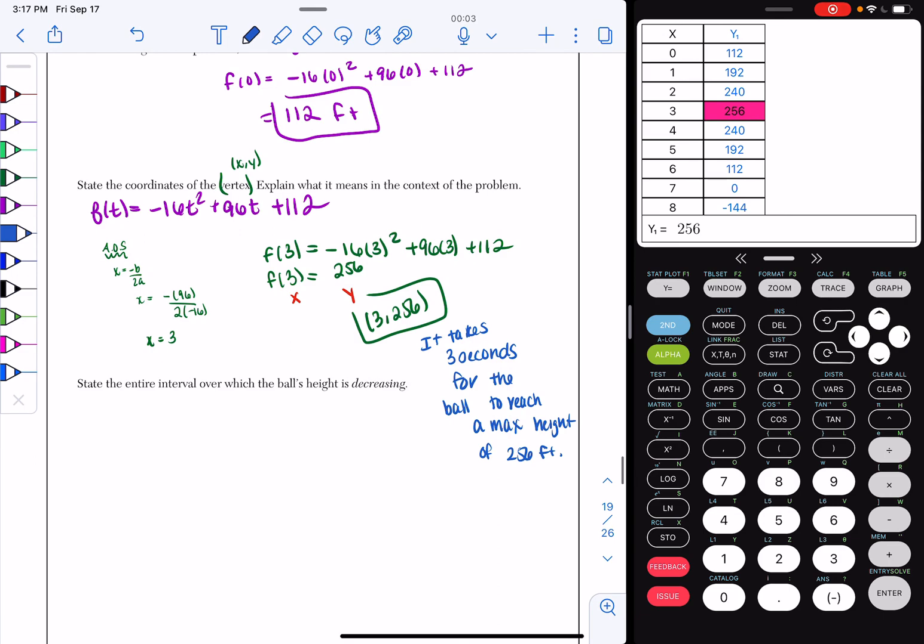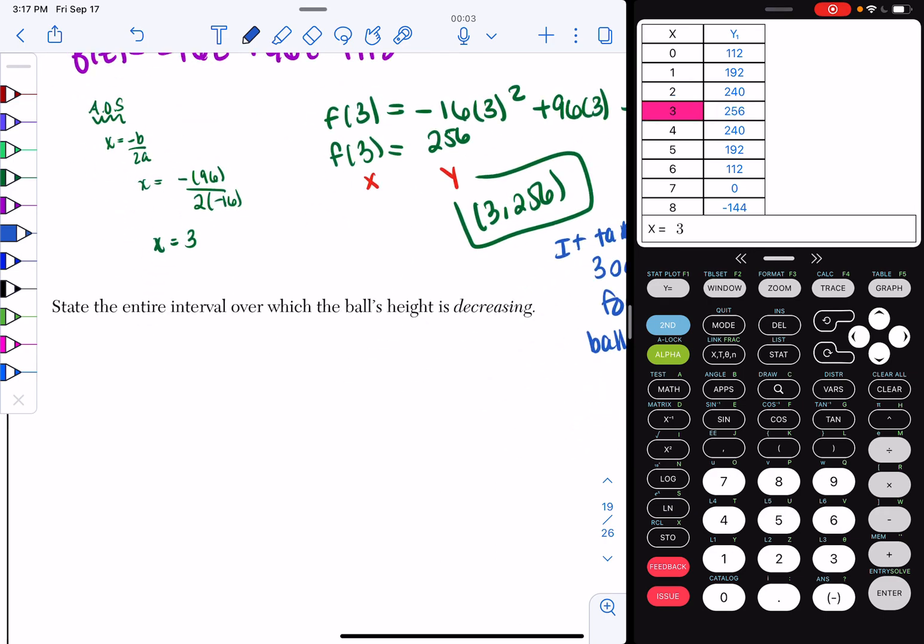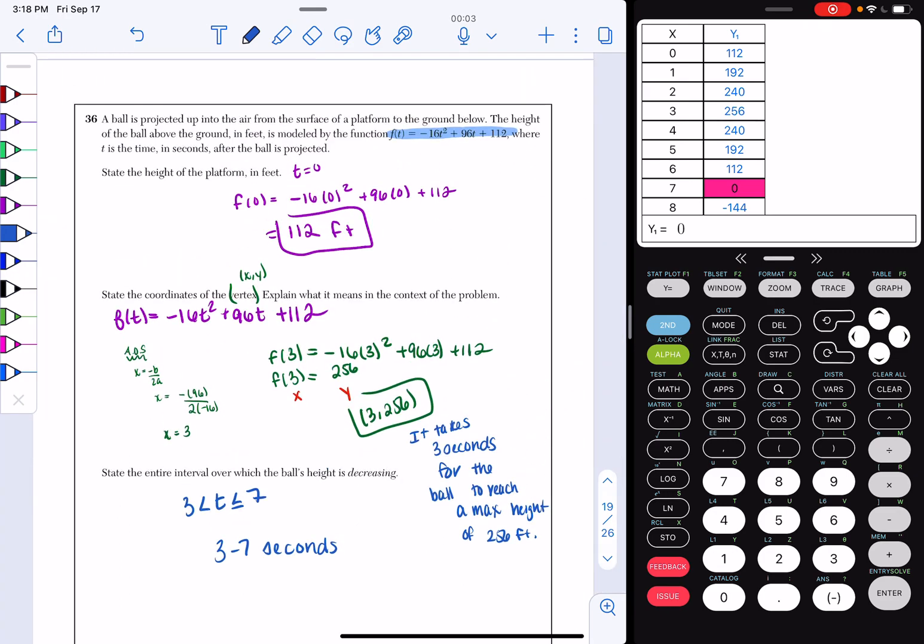Now, your next question. It says, state the entire interval over which the ball's height is decreasing. So, that means my y values are going down. So, if you look from 0, I get 112, 192, 240, 256. My values are going up. So, it starts to decrease after x equals 3. So, 3 < t ≤... And if I look, I go to 240, go to 192, go to 112, go to 0. So, I end at 7. So, I basically decrease from 3 to 7. You can also write 3 to 7 seconds is when your ball is decreasing. And there is no work that needs to be shown. You can just rely on your table of values. And that's it for question number 36. That's how you get four points.